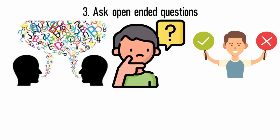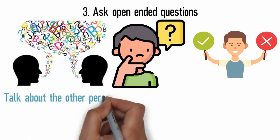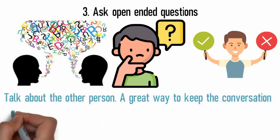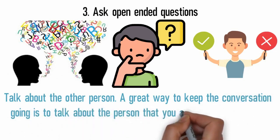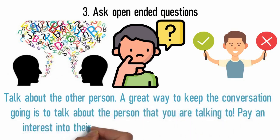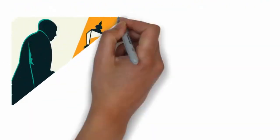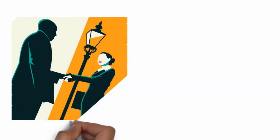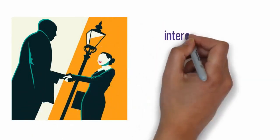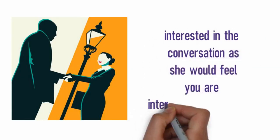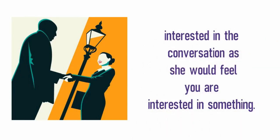These kinds of questions encourage people to talk, and they can be a lifesaver in stalling conversations. Talk about the other person. A great way to keep the conversation going is to talk about the person that you are talking to. Pay an interest into their upbringing, social values, and way of life. If you show interest to the other person, then the conversation will never die. Asking questions is also a good way of getting her involved and interested in the conversation.